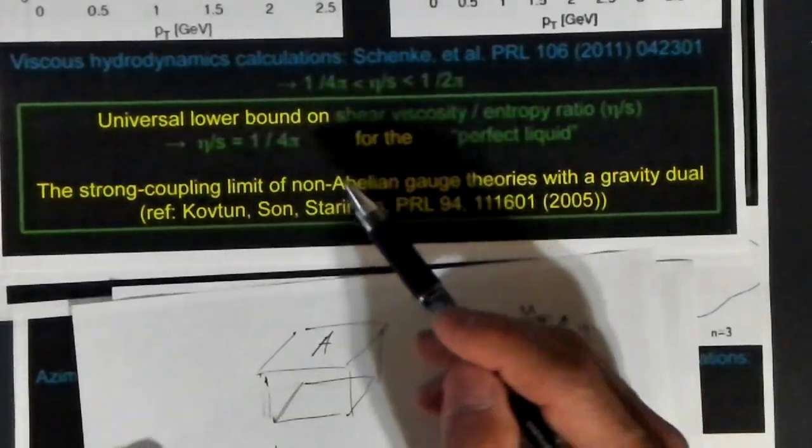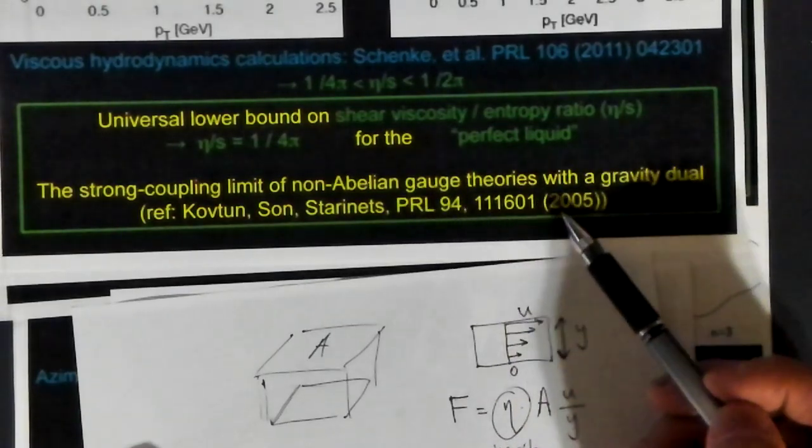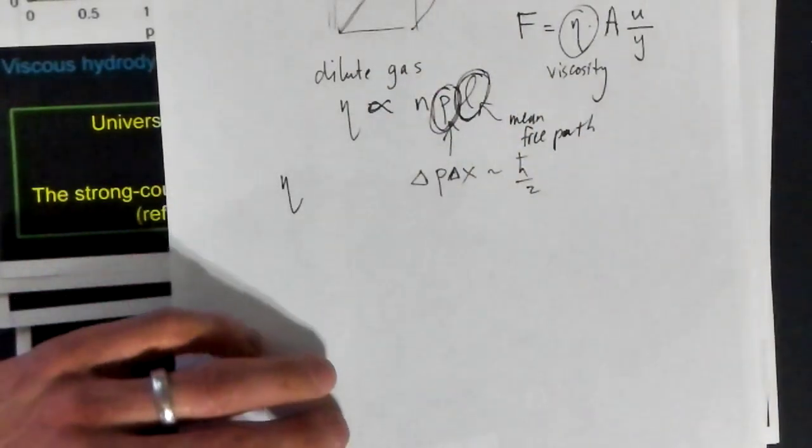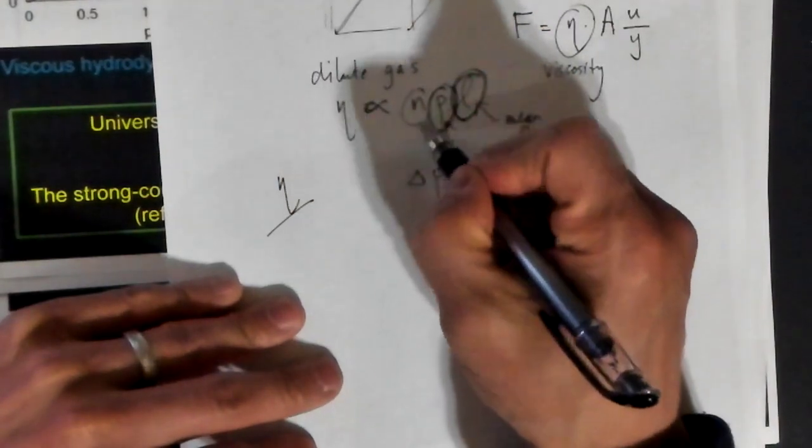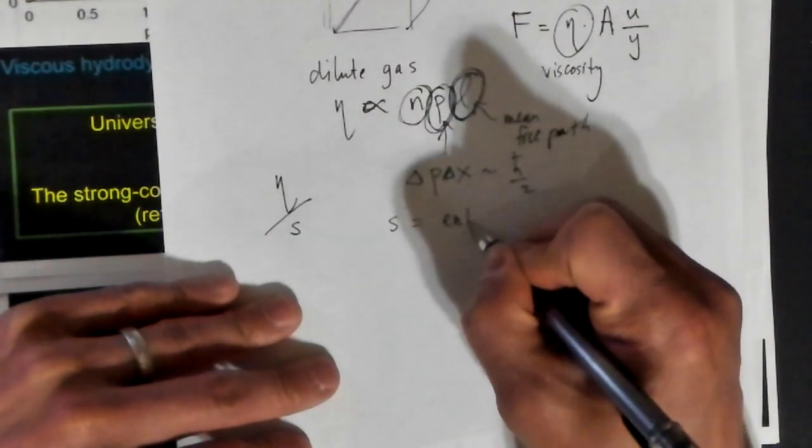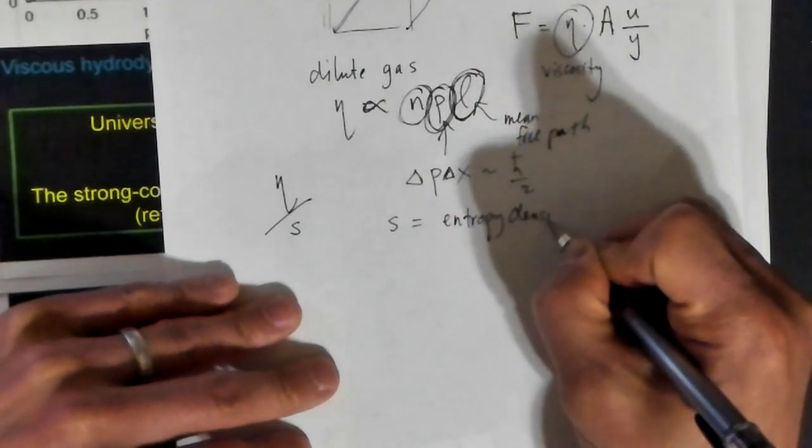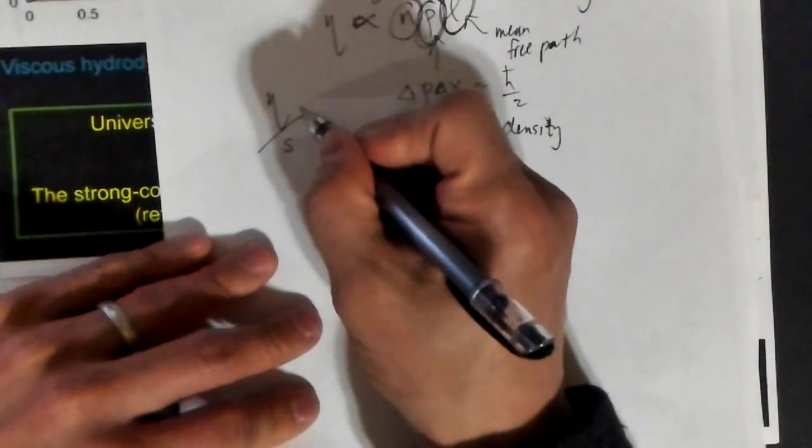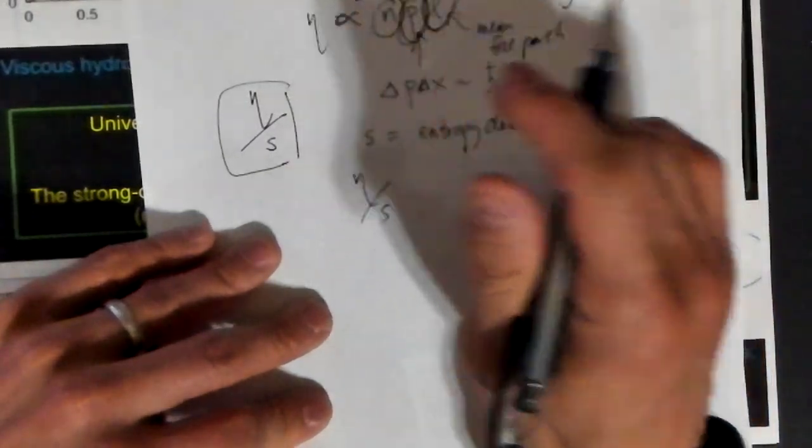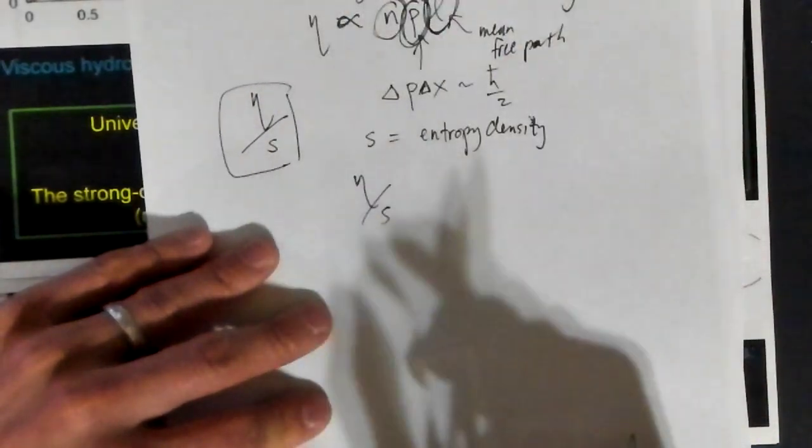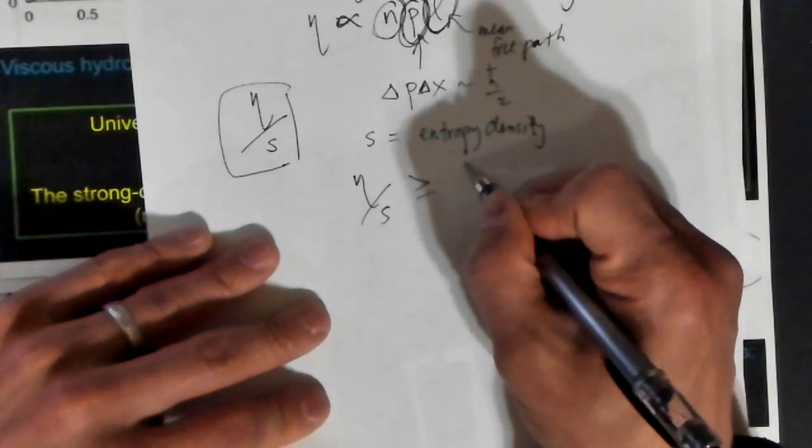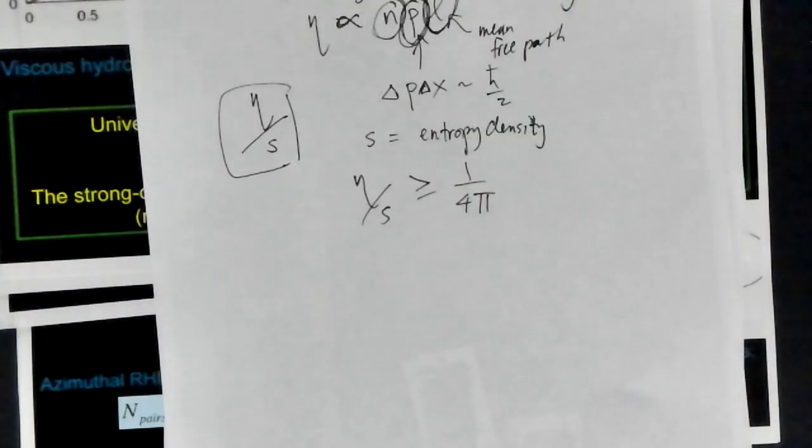There was this paper, now a very famous paper, by Kovtun, Son, and Starinets, PRL from 2005, that said that if I take the viscosity and divide by something that looks like a density to get rid of the particle density, divide by something called S, the entropy density, they made a conjecture that this is actually bounded below. They said eta over S was perhaps bounded by 1 over 4 pi, that it could not be less than 1 over 4 pi. I'm taking units where Boltzmann's constant is equal to 1.